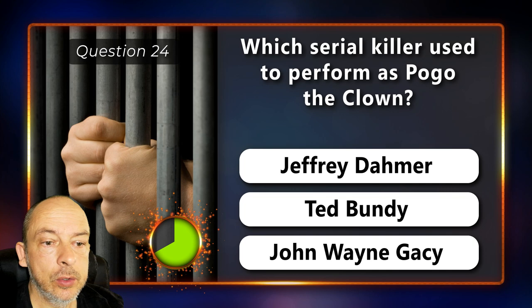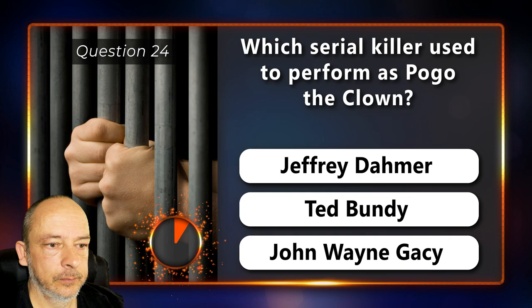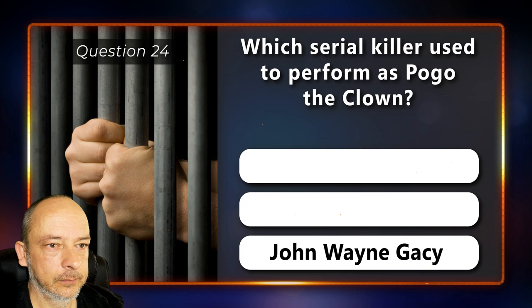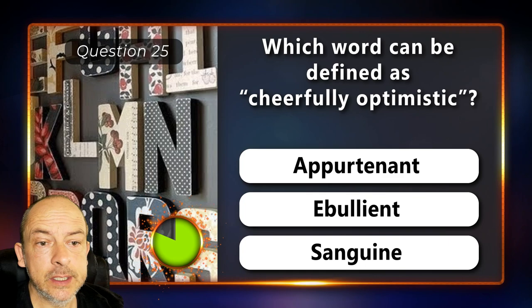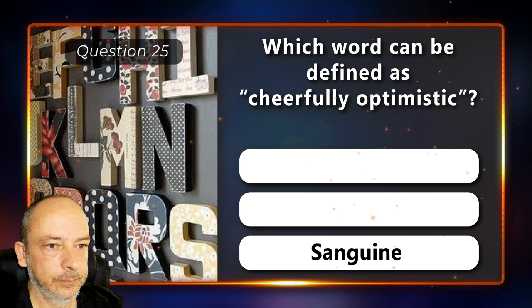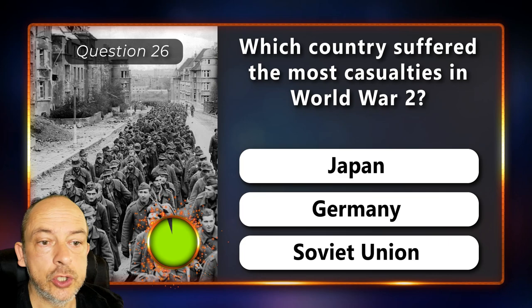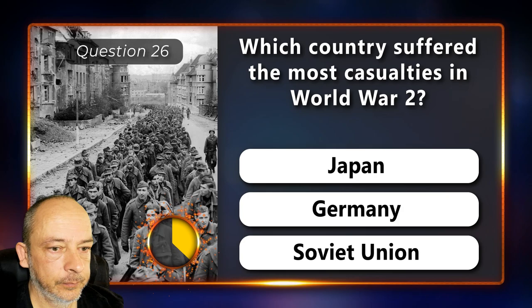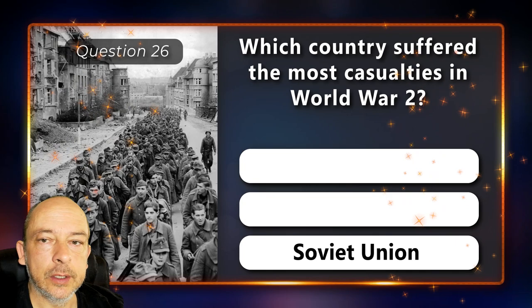Question 24: Which serial killer used to perform as Pogo the Clown? Jeffrey Dahmer, Ted Bundy or John Wayne Gacy? John Wayne Gacy. Question 25: Which word can be defined as cheerfully optimistic — ebullient or sanguine? Question 26: Which country suffered the most casualties in World War II? Japan, Germany or the Soviet Union? The Soviet Union.